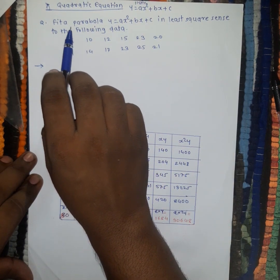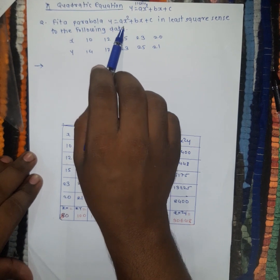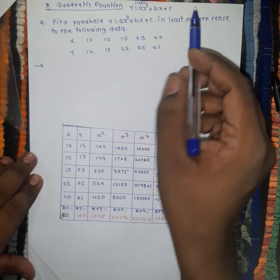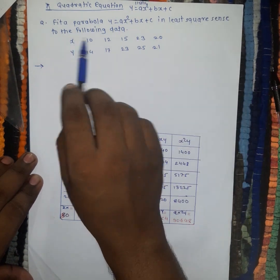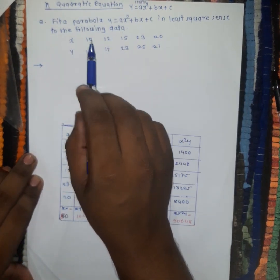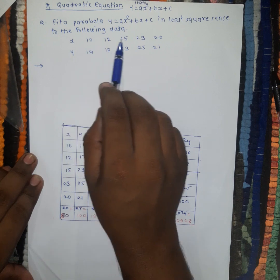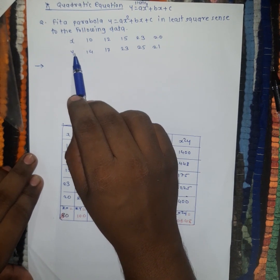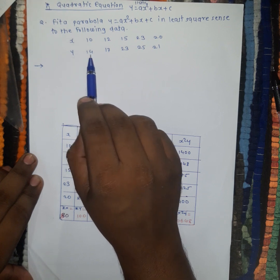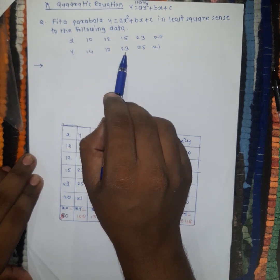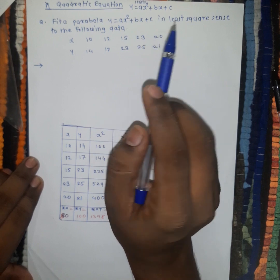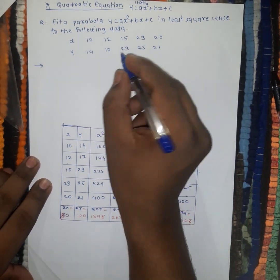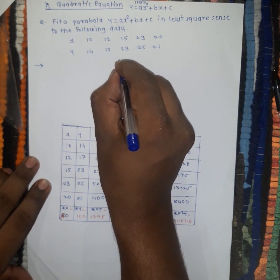Fit a parabola y is equal to ax squared plus bx plus c in the least square sense to the following data. The data provided is x: 10, 12, 15, 23, 20, and the corresponding values for y are 14, 17, 23, 25, and 21.